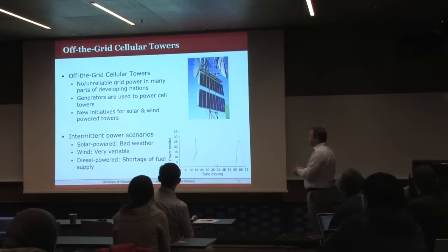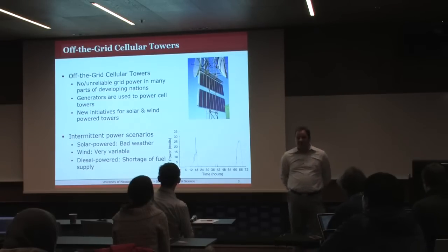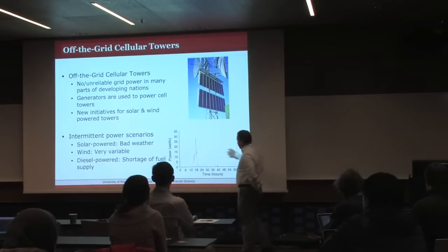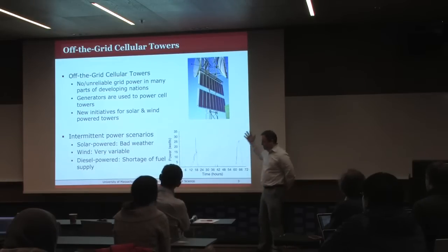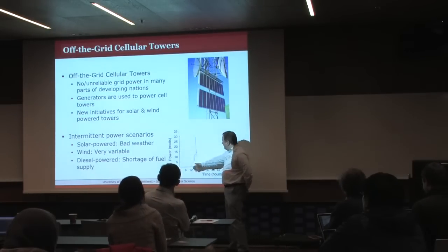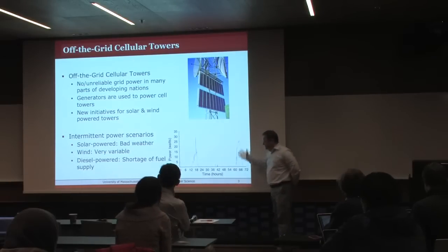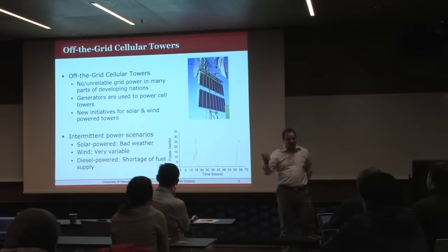Generators are used to power these cell towers. There are also initiatives to use renewable energies like solar and wind, as you can see in this picture. If you look at this solar trace we took on our campus, Massachusetts is probably not the best place for taking solar traces. You can see it goes up and down, especially in the wintertime, so you don't have the power you need all the time.